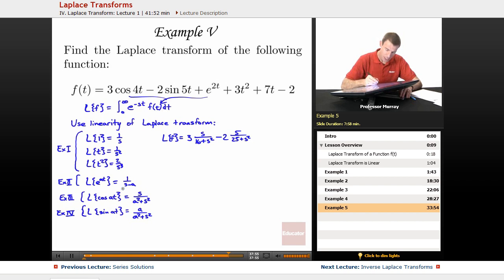Plus e to the 2t. I can read that one right here. That's plus 1 over s minus 2, plus 3t squared. t squared gives me 2 over s cubed, so 3 times 2 over s cubed, plus 7t, plus 7 times 1 over s squared, minus 2 times 1 over s, because the Laplace transform of 1 is 1 over s.